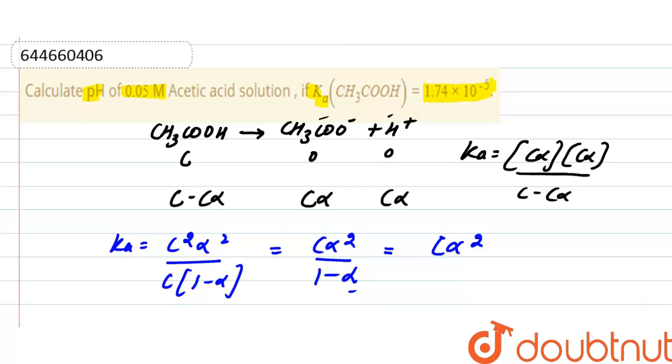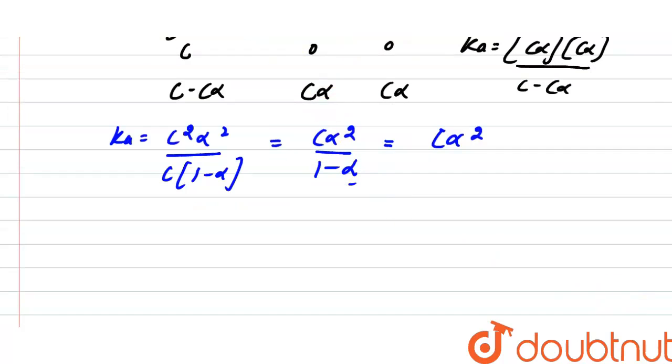Here we need to find the degree of dissociation, so α = √(Ka/C). The value of Ka is 1.74 × 10^-5 and the concentration is 0.05. After solving, α = 1.865 × 10^-2.